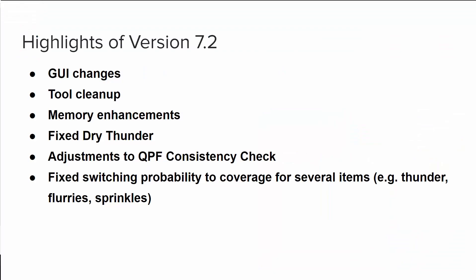In today's presentation we are going to discuss some of the highlights for version 7.2, which include GUI changes, some tool cleanup, memory enhancements, fixed dry thunder, adjustments to the QPF consistency check, and fixed the switch in probability of coverage for several items such as thunder, flurries, and sprinkles.